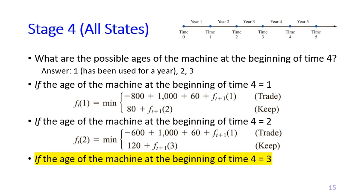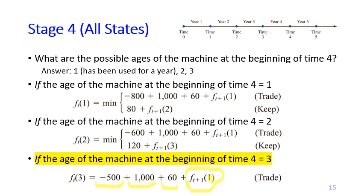If the machine is already three years old at the beginning of time four, the only possible decision is to trade it with a new one. We sell the three-year-old machine, buy a new one because the auto repair shop must always have the machine, and the maintenance cost is for the first year of operating the new machine. At the next stage, the age is one year old. Since this is stage four, T plus one equals five, so you go to stage five and use F5(1), F5(2), and F5(3) to compute F4(1), F4(2), and F4(3).